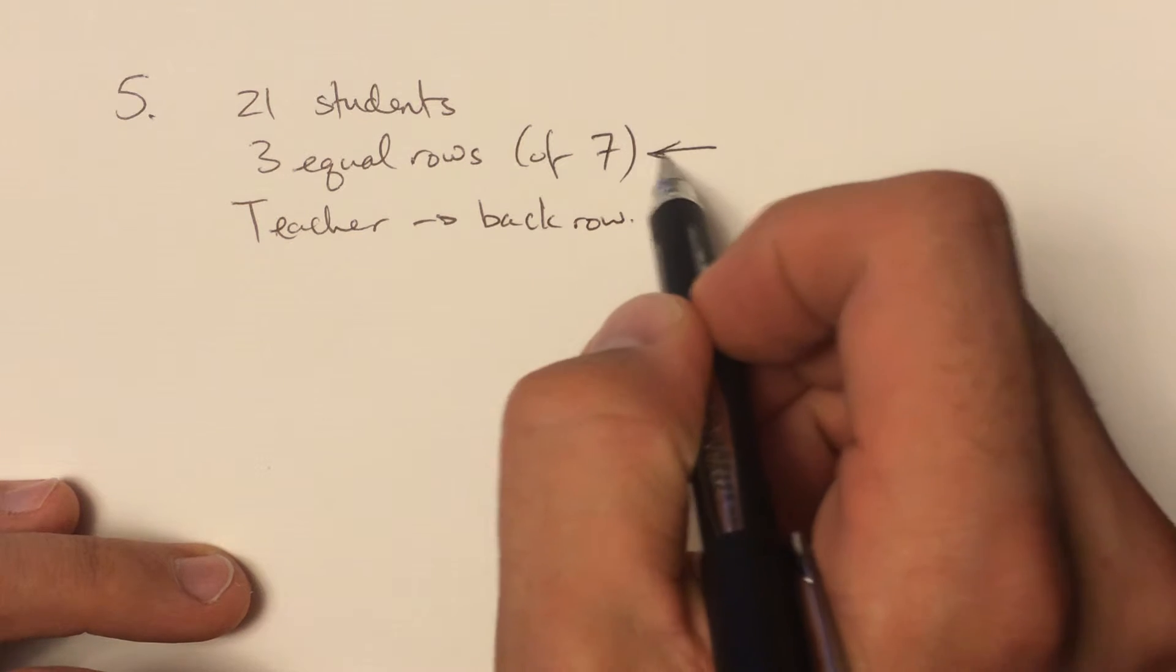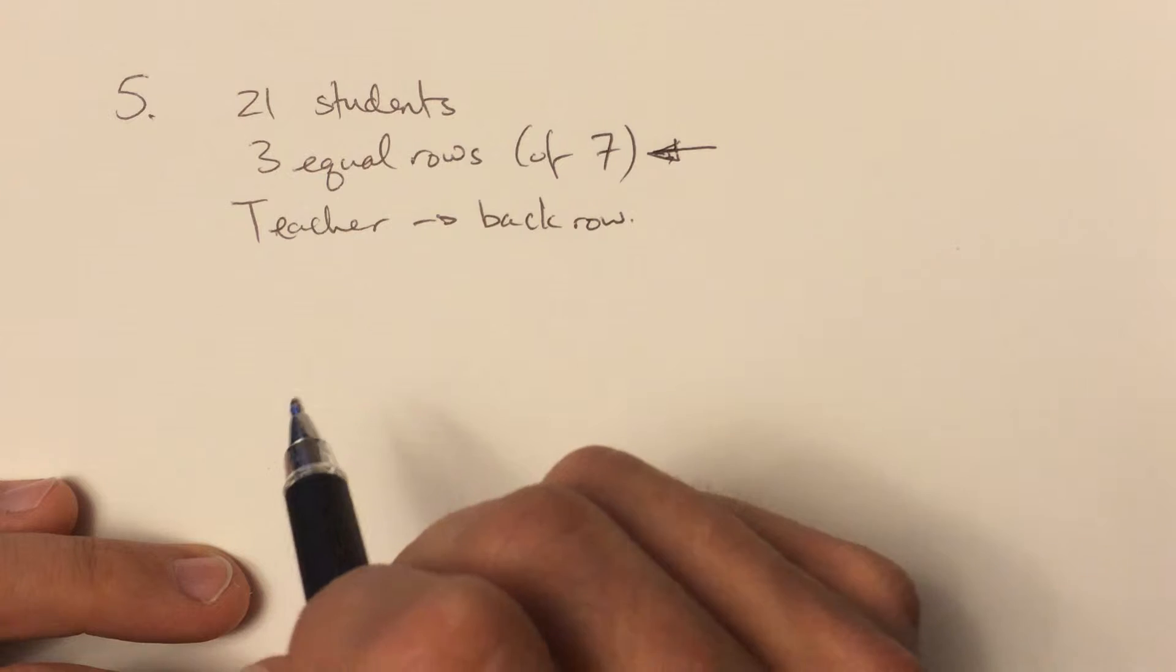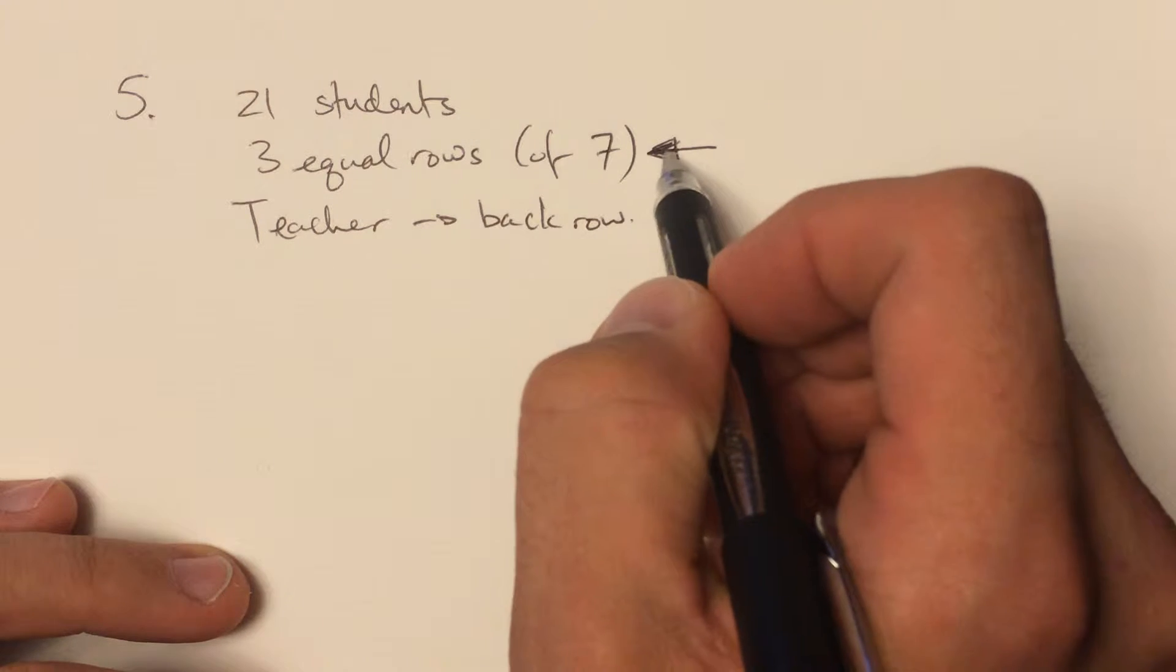So this fact right here, the fact that they're in three equal rows, was not useful information for you.